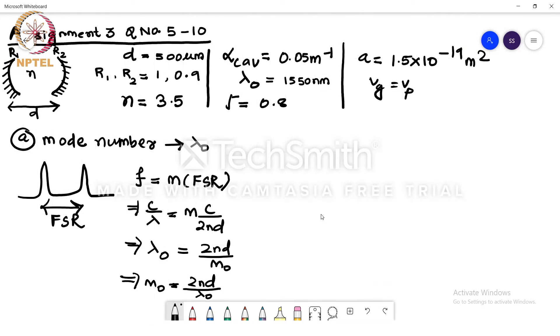Part B of the question needs us to calculate, again it's a straightforward question, separation between two consecutive modes. So we know that separation between two consecutive supported modes is nothing but our FSR, and we just now wrote the expression. FSR is nothing but c by 2nd and we have all the information here, we need to substitute this.